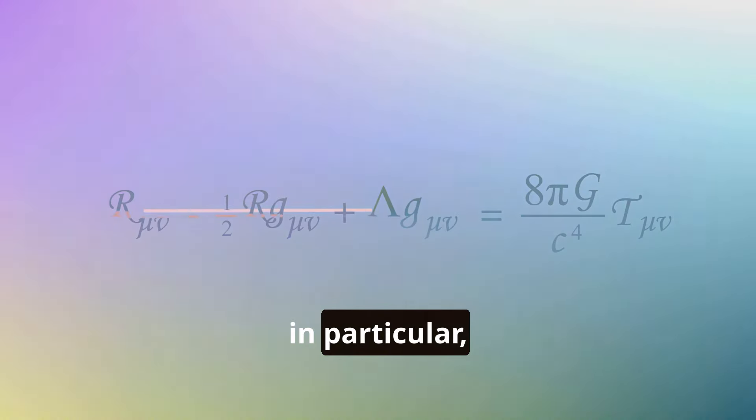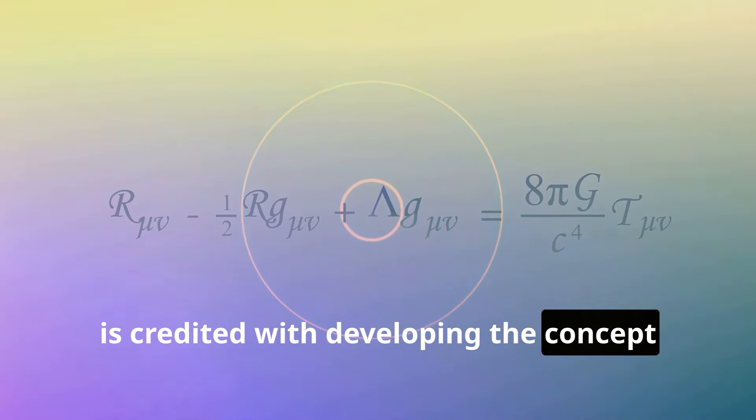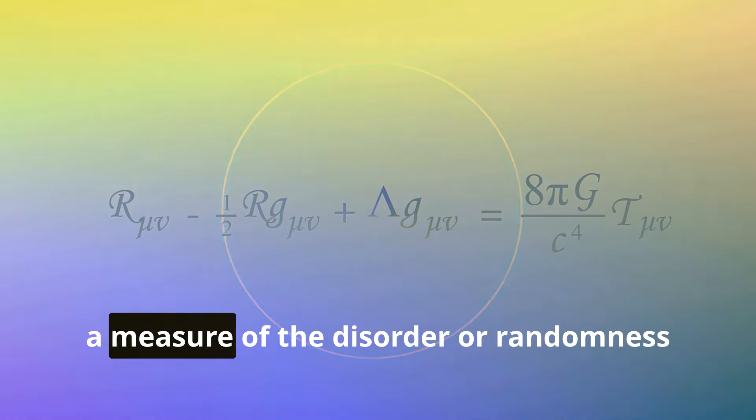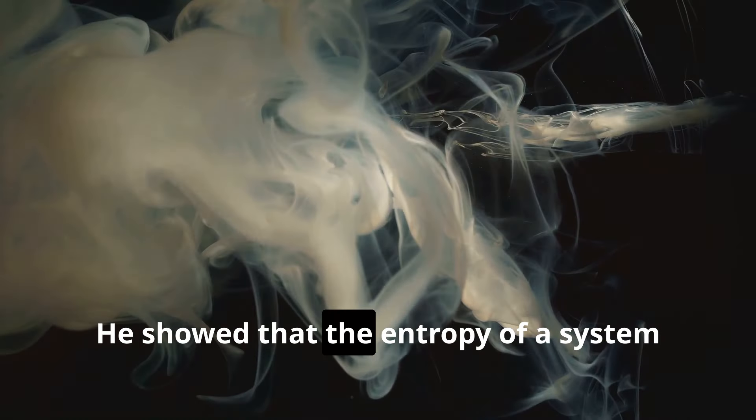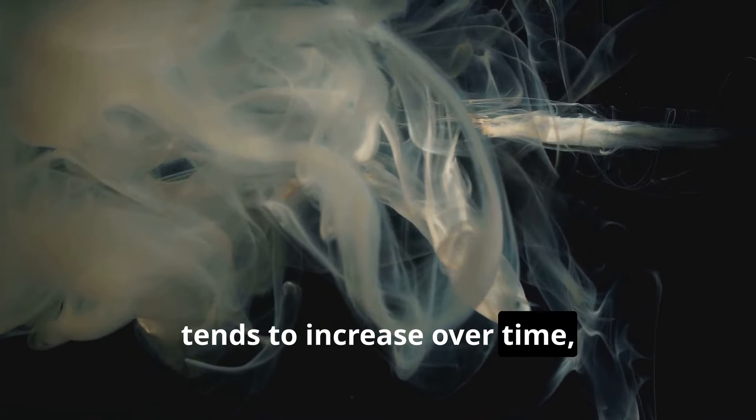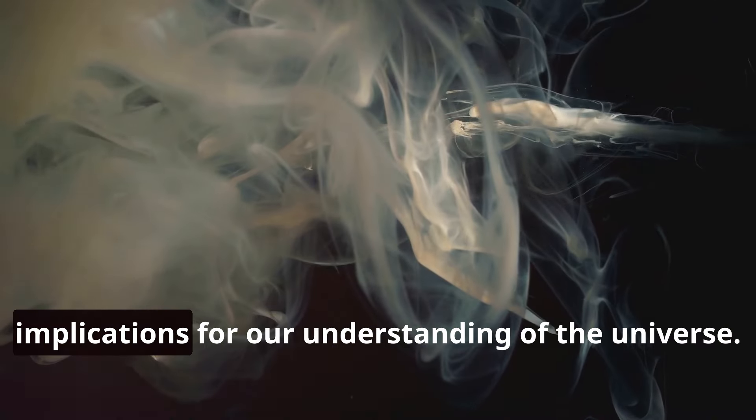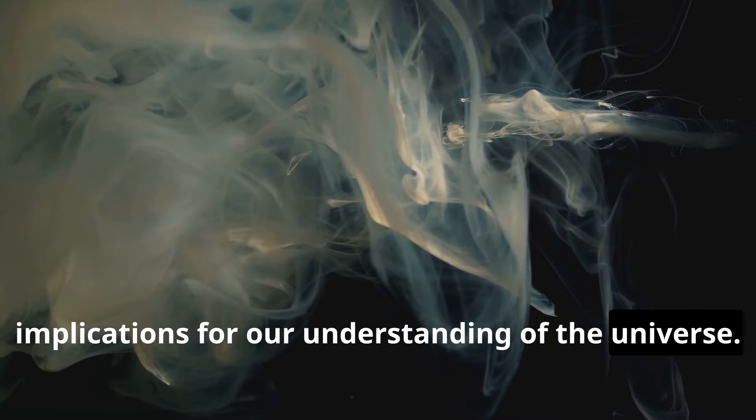Boltzmann, in particular, is credited with developing the concept of entropy, a measure of the disorder or randomness of a system. He showed that the entropy of a system tends to increase over time, a principle that has profound implications for our understanding of the universe.